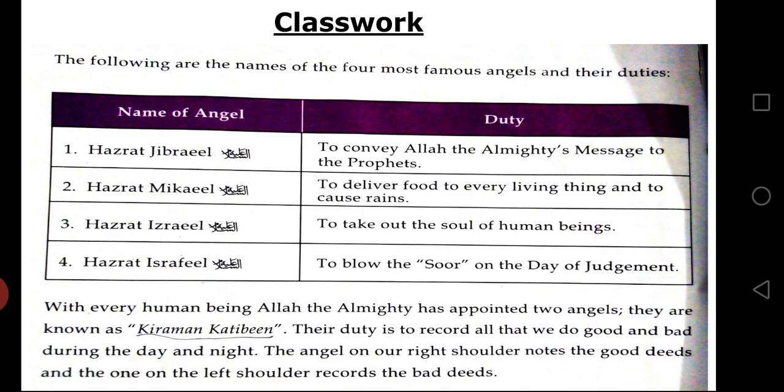On page number 20, at the upper part, you can see there are two columns. On the left side it is written 'Names of Angels' — there are four. On the right side it is written 'Duty'. Number one is Hazrat Jibrail (A.S.). The duty of Hazrat Jibrail is to convey Allah the Almighty's messages to the prophets.